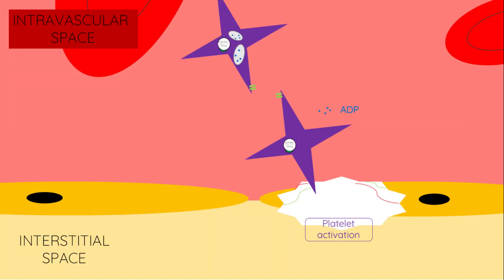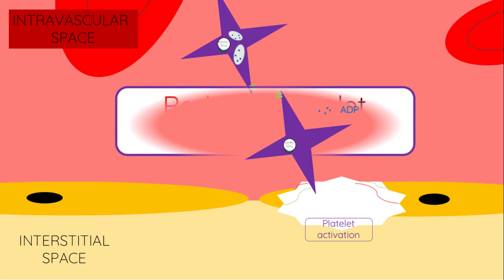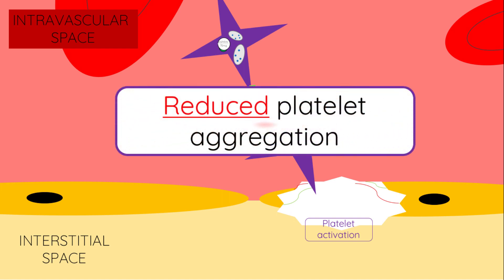Platelets have an average lifespan of around 7–10 days, and so the antiplatelet effects of aspirin can last up to this long due to its irreversible inhibition of COX-1. Aspirin ultimately leads to reduced platelet activation and subsequent aggregation of platelets.